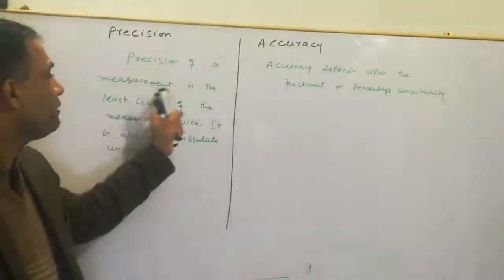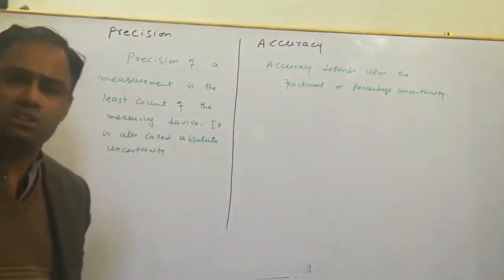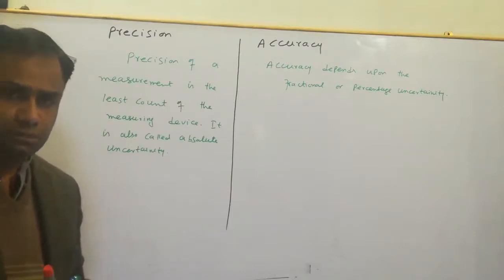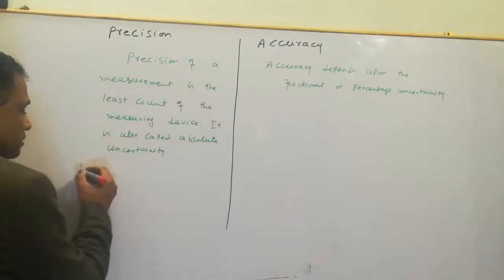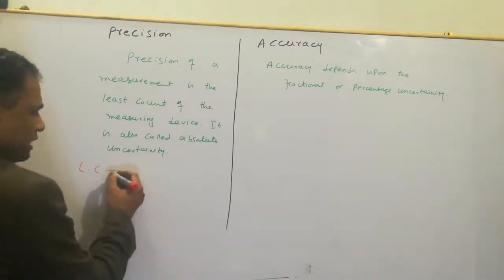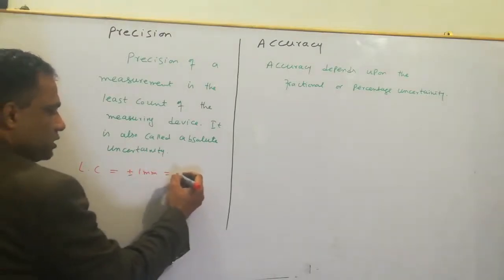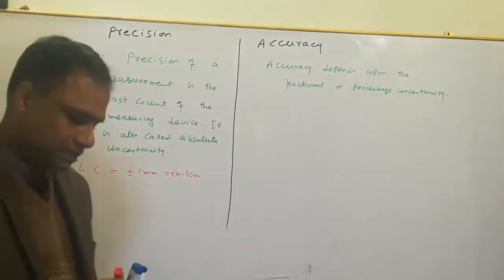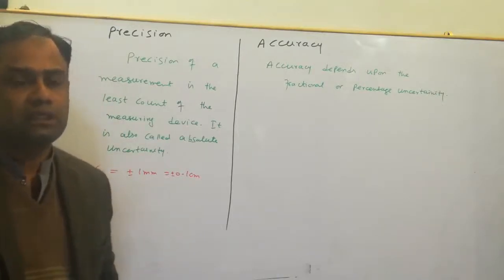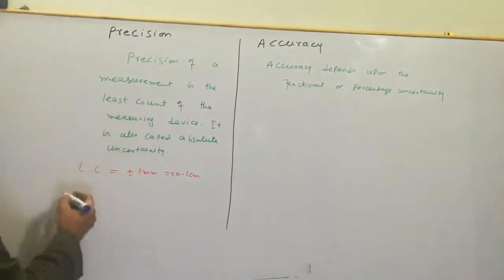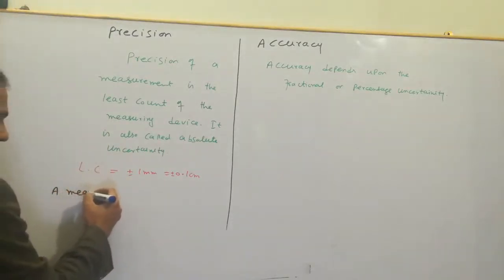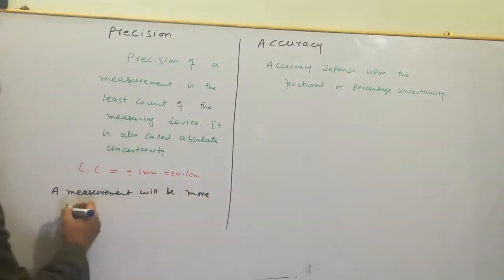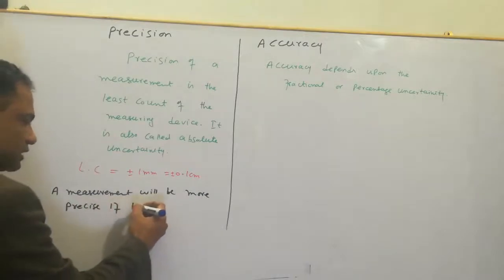Precision of a measurement is the least count of the measuring device, also called absolute uncertainty. A measurement will be more precise if the least count is less.